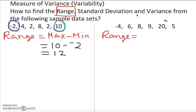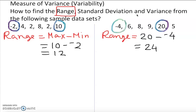Now for the second data set, the maximum number is 20 — remember, it's not necessarily the last number, you have to look for the biggest value. The minimum is negative 4. So we have 20 minus negative 4, which gives us 24. The range of the second data set is double that of the first, or we can say the first is half of the second.